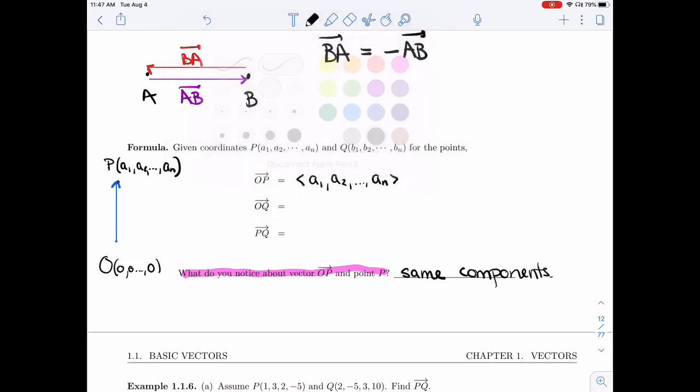Now, the same is going to be true for OQ. It's going to have the same component as Q, so I'm going to get b_1, b_2, and b_n.